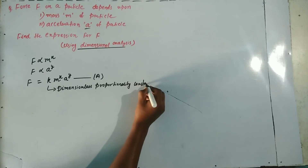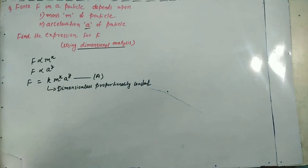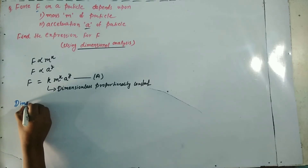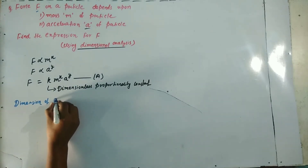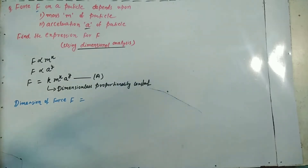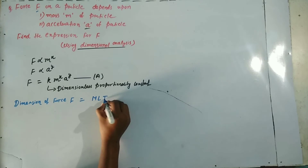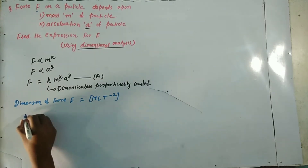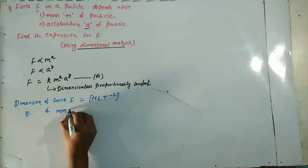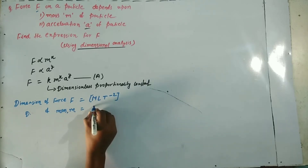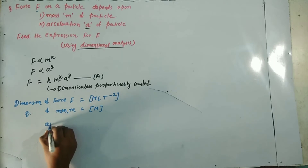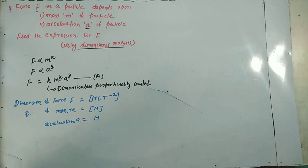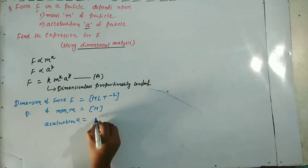Now we find the dimensions of the terms: force, acceleration, and mass. The dimension of force is MLT to the power minus 2. The dimension of mass is M. The dimension of acceleration is LT to the power minus 2.